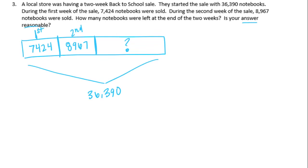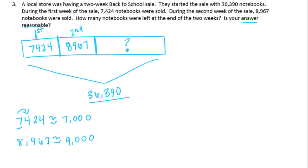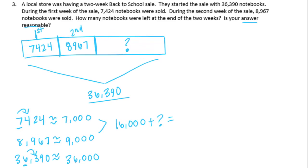Rounding to the nearest thousand: 7,424 rounds to 7,000; 8,967 rounds to 9,000; and 36,390 rounds to 36,000. Adding the two weeks sold: 7,000 plus 9,000 equals 16,000. Then 16,000 plus what equals 36,000? That would be 20,000. So our estimate is about 20,000 notebooks remaining.